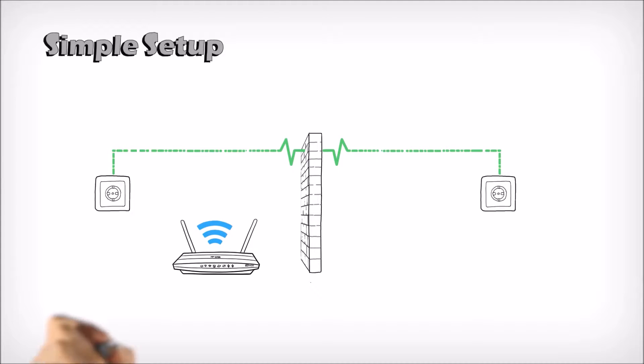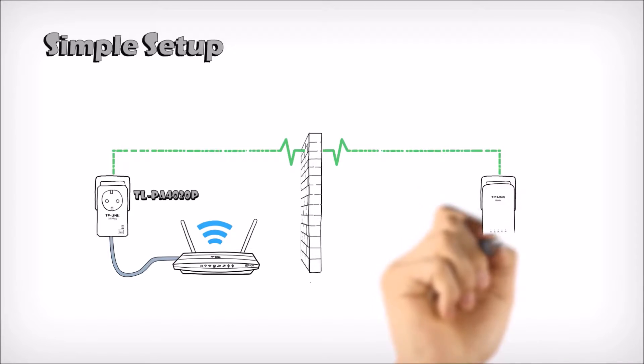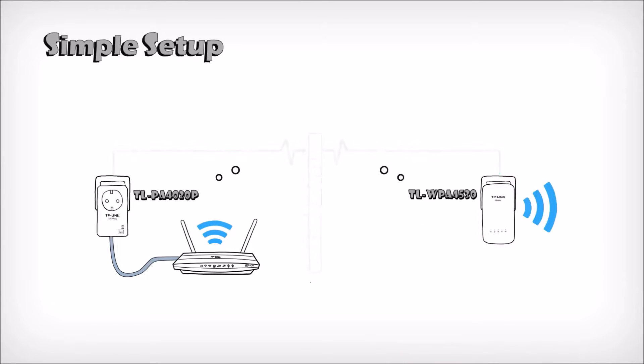Setting up your Powerline network is simple and takes only minutes. Just plug it in, press the pair buttons, and start enjoying fast, secure, dual band connections anywhere in your home.